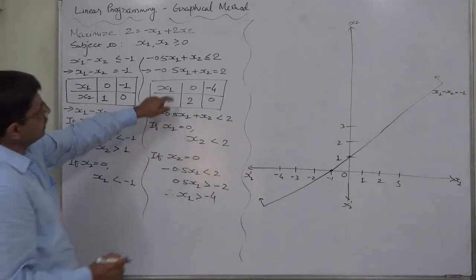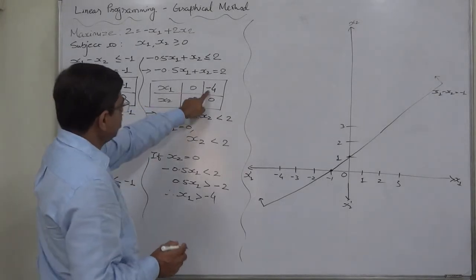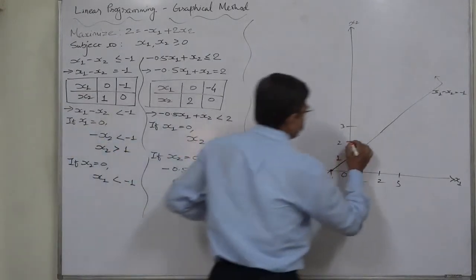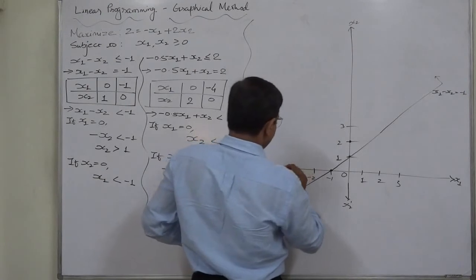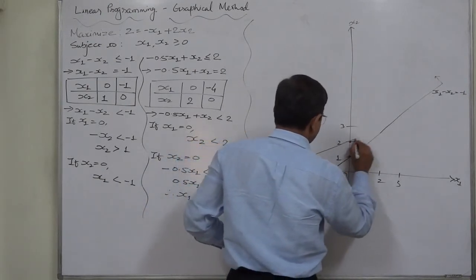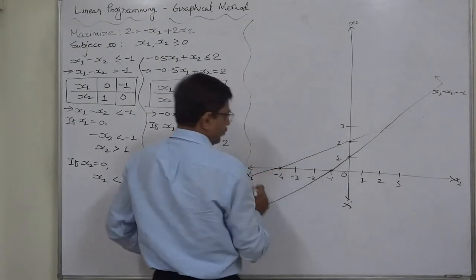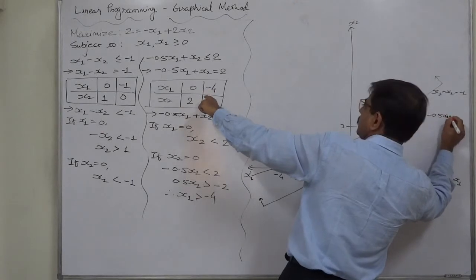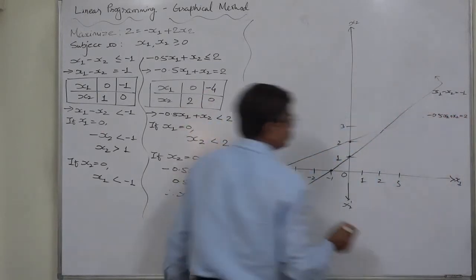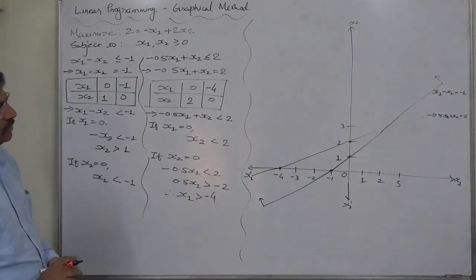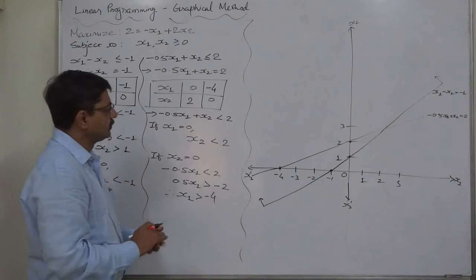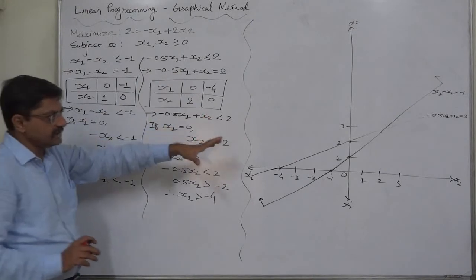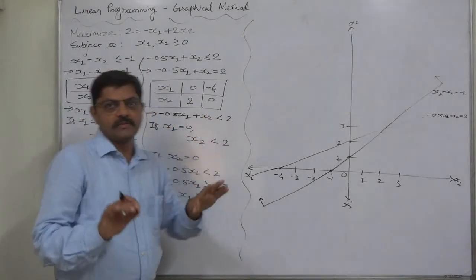Now, second constraint, minus 4 on x1 and 2 on x2. Let's draw a line passing through both of these points. Something like this. Minus 0.5x1 plus x2 equals to 2. To be very frank, to draw the graph, these kind of boards are useless. But the biggest gain of using this kind of board is to save ourselves from the dust of chalk.